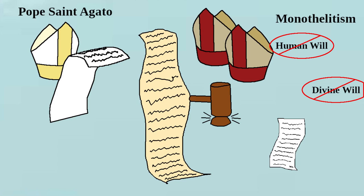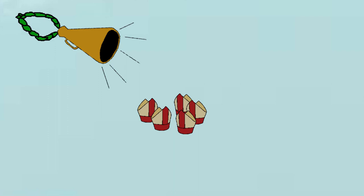They also wrote up a profession of faith condemning this heresy and a letter on dogma from the pope, and sent them, along with three papal legates, to the emperor. The emperor ordered a council of bishops to begin a short time after that, which would last for eighteen sessions.